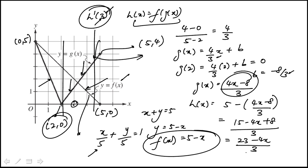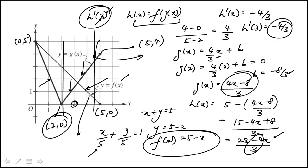We're asked for the derivative at x equal to 3. Since h of x is a linear function, h prime of x is just minus 4/3, the coefficient of x. It's a constant, so h prime of 3 is minus 4/3, and that is answer choice b.